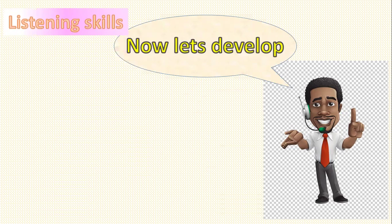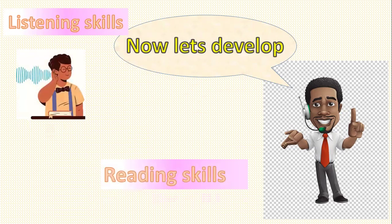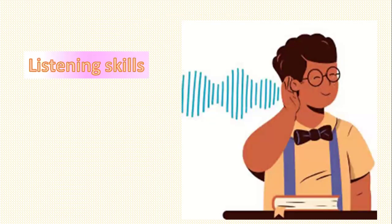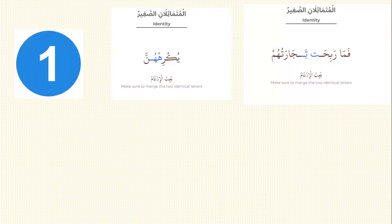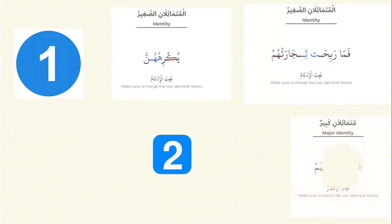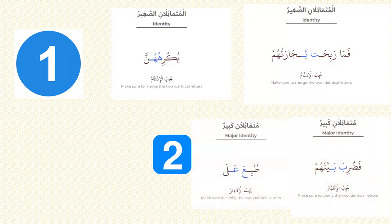Now let's develop your listening skills and your reading skills. Let's start with the listening skills. Please look at the examples and try to read. Yukrih hun. Number one: identity mutamathelan saghir. Number two, number three.